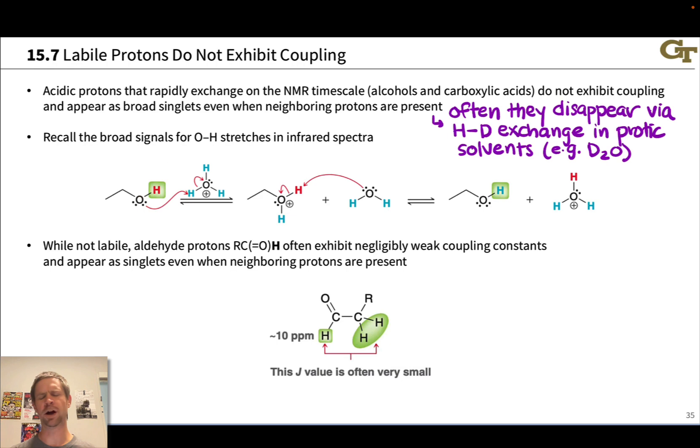Another example of a type of proton that doesn't exhibit coupling worth pointing out are aldehyde protons. They often exhibit negligibly weak coupling constants. This is just kind of an accident of where they show up geometrically speaking, the fact that they're connected to the carbonyl group which is trigonal planar, and they're also extremely de-shielded, way up at 10 ppm. Their J values with neighboring protons are often quite small, and you'll often see these appear as singlets even when we would expect a triplet if there's a CH2 group next door.